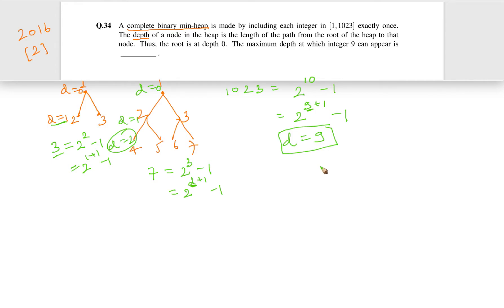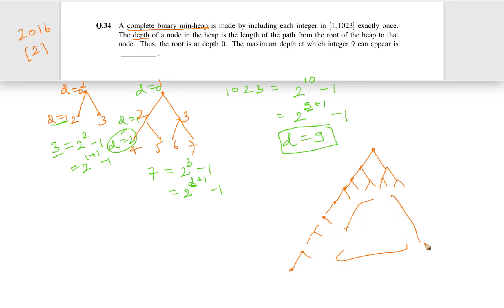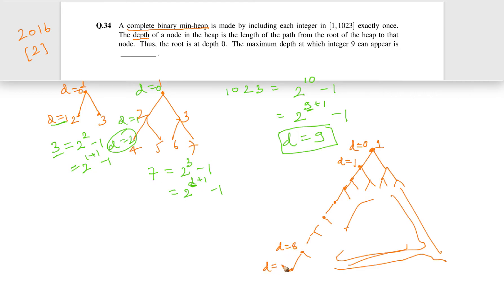Let us see the structure of how that heap is going to look. I will not draw all 1023 elements, but showing the structure — it continues filling in the standard complete binary fashion. The root is at depth 0, containing the minimum element which is 1. Nodes deeper in the tree go to depth 1, depth 8, and the leaf nodes of this complete binary min heap will have a depth of 9.